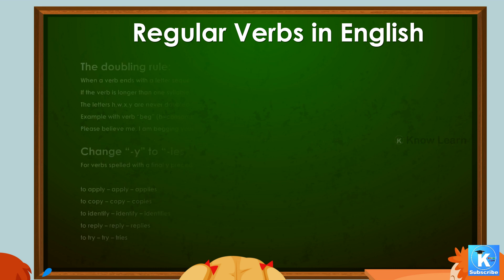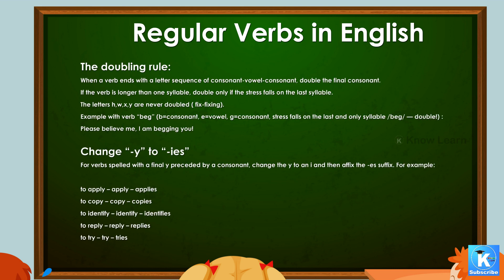The doubling rule. When a verb ends with a consonant-vowel-consonant sequence, double the final consonant. If the verb is longer than one syllable, double only if the stress falls on the last syllable. The letters h, w, x, y are never doubled — for example, fix → fixing. Example with 'beg': b = consonant, e = vowel, g = consonant. Stress falls on the last and only syllable, so we double: 'Please believe me, I am begging you.' 'Am begging' is in the present continuous tense.